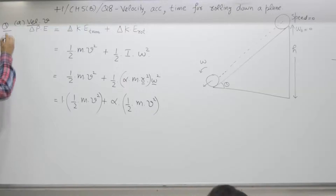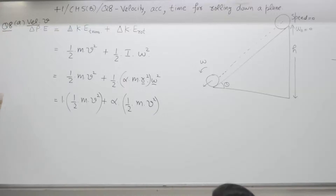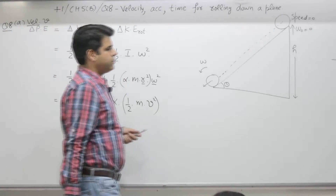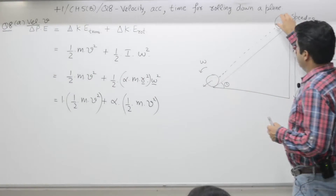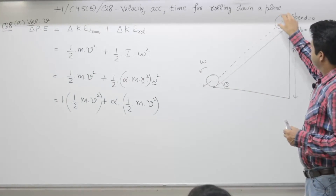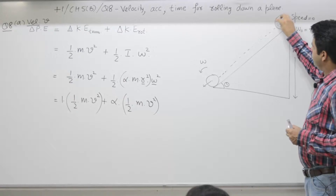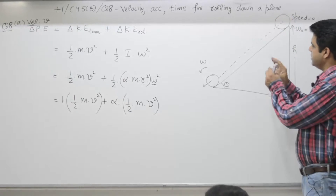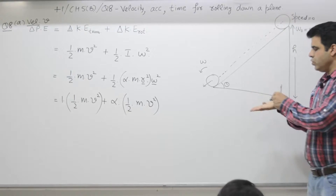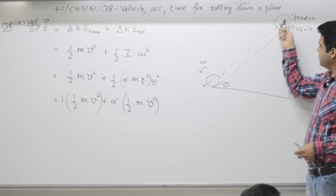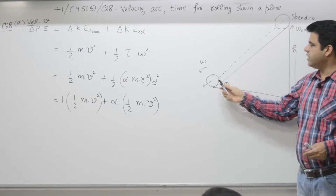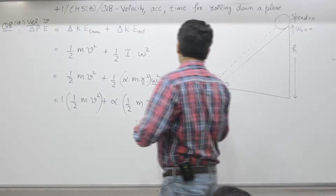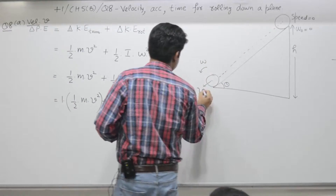Question number 8, first part. A particle starts with speed 0 as it rolls down an inclined plane, moving down from the initial position to the final position where the speed is V.